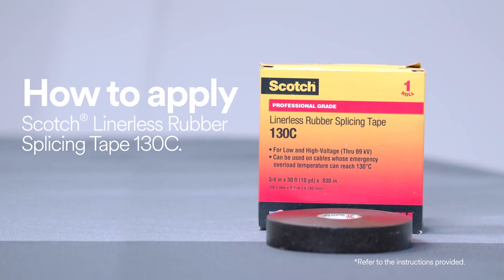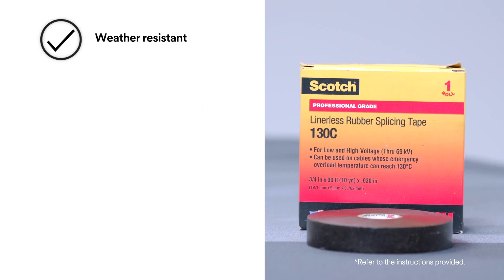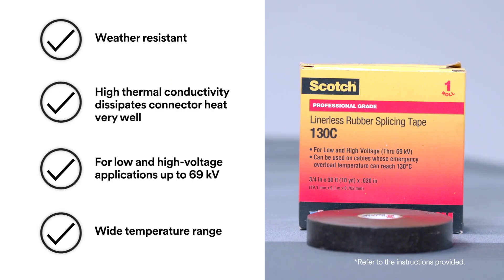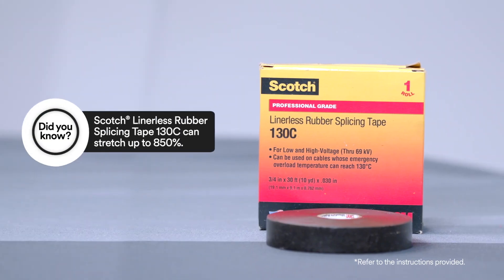To help protect an inline connector splice, use Scotch Linerless Rubber Splicing Tape 130C because it provides electrical insulation, environmental sealing, and mechanical protection, or for building up primary insulation up to 69 kilovolts.